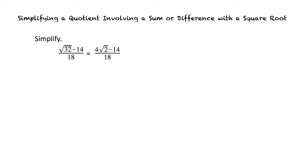Then we can factor the numerator, which gives us 2 times 2 square root of 2 minus 7 over 18. Then we can cancel out our common factor of 2 on the numerator and denominator. This gives us our final result of 2 square root of 2 minus 7 over 9.